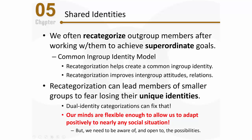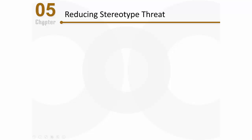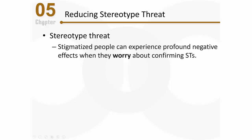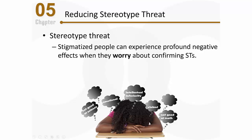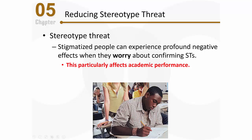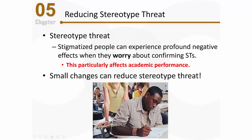We really need to be aware of and open to those possibilities. As social strategists, we might need to help some people understand what their options are. Let's switch gears and talk about some ways in which we can reduce stereotype threat. Stigmatized people can experience profound negative effects when they worry about confirming other people's stereotypes. For example, African American people might worry about confirming negative stereotypes regarding their intelligence, and this threat can lead them to worry and get distracted, significantly affecting their academic performance. This is particularly likely when a black student is vastly outnumbered by white students.